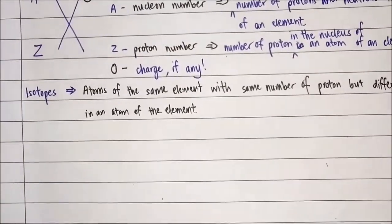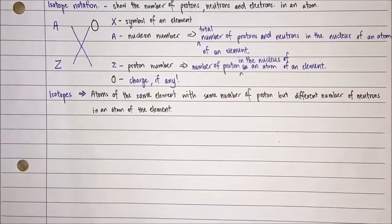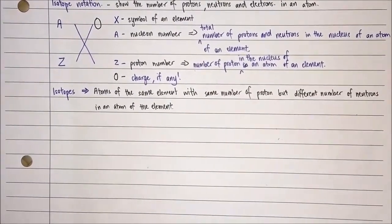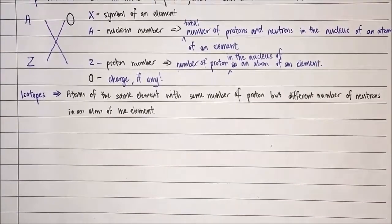Now we will move on to the isotope. Definition of isotope is the atom of the same element with the same number of protons, but different number of neutrons in an atom of the element. That's all from me. Thank you.